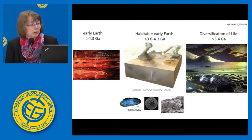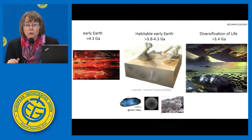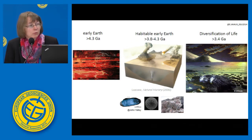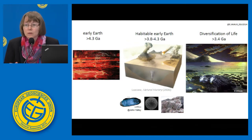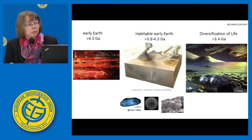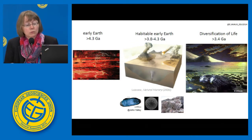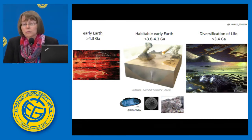Very early Earth was not habitable — Earth was really hot, with a hypothesis of a magmatic ocean, making it really difficult for life to appear before 4.3 billion years ago. Then we quickly move to a habitable early Earth between 4.3 and 3.8 billion years ago, though there is some debate. Evidence suggests Earth had liquid oceans, some volcanic activity, a lot of hydrothermal activity, nutrients, and possibly life appeared at that time. And around 3.4 billion years ago, we have a range of evidence showing that life was already diversified.